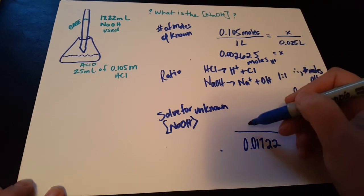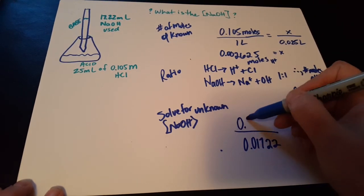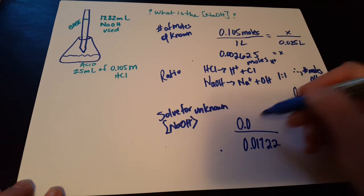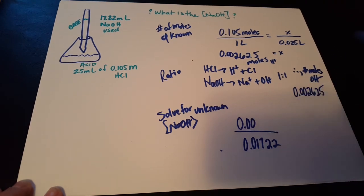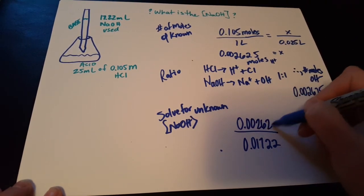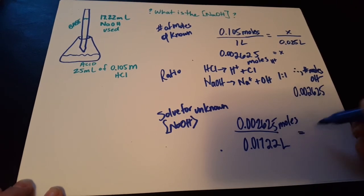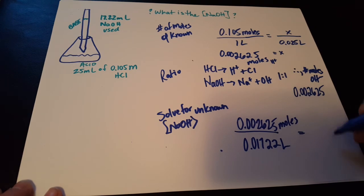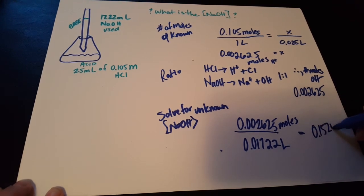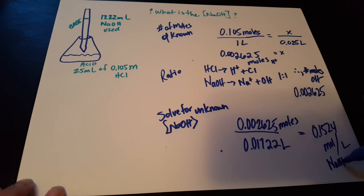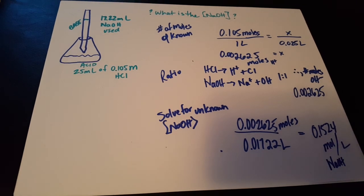So we'll just do that division, and we'll find 0.1524 moles per one liter of the sodium hydroxide.